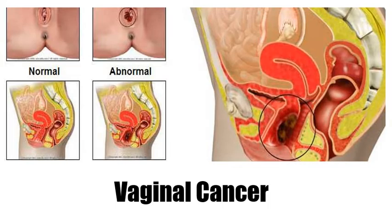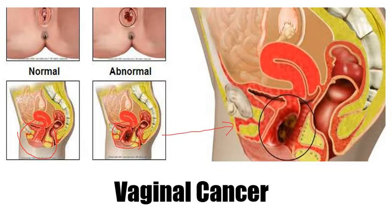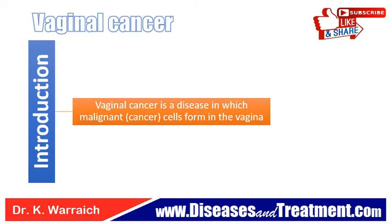What is vaginal cancer? As you can see in this picture, this is the normal anatomy with no abnormality. Here you can see some abnormal cells — these are the cancer growths. Vaginal cancer is a disease in which malignant cells form in the vagina. There are two types of growths: malignant growth and benign growth. Malignant are the cancer growths, where cells multiply abnormally.